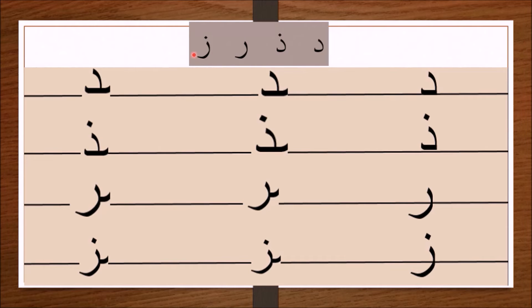So here is Dal, Dhal, Ra, and Zay at the beginning of a word. And when they come at the middle of a word, they are written this way. These strokes are the lines that join them to the letters that come before them.